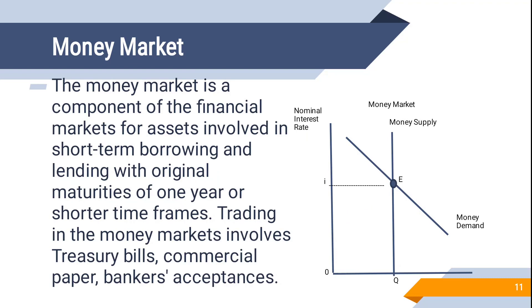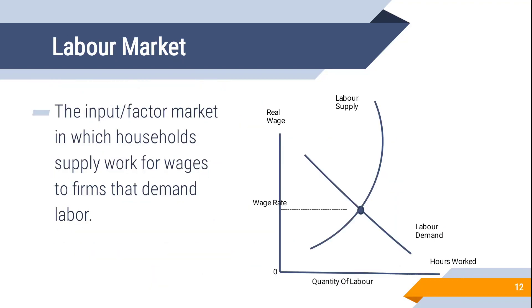The money market is where we talk about short-term and long-term financial dealings. For example, trading Japanese yen or buying financial securities like Yahoo stock. The money market is a component of financial markets for assets involving short-term and long-term borrowing and lending with original maturities of one year or more. Treasury bills, commercial papers, and bankers' acceptances are all part of the money market.